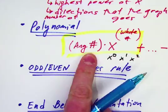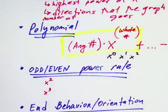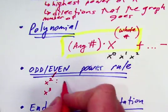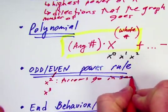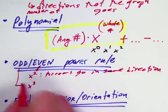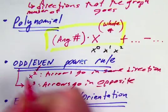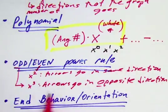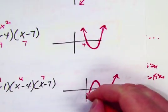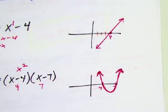The next rule to understand is the odd/even power rule. If you have an even power like x squared, the arrows go in the same direction. If you have an odd power like x to the third, the arrows go in opposite directions. A helpful memory trick: odd and opposite both start with O. So for x to the third (odd), one arrow is down and one is up — opposite. For x squared (even), both arrows go in the same direction.